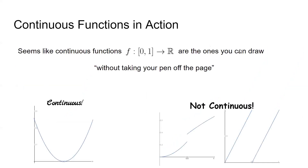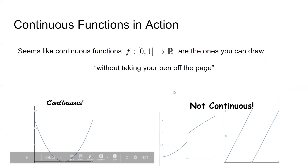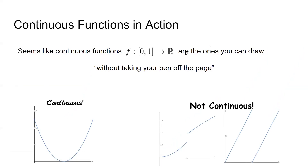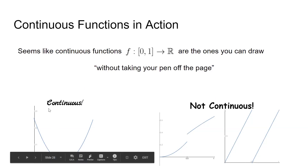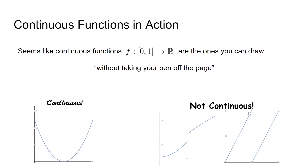From the last video, continuous functions are functions which you can draw without taking your pen off the page. Right now we're just talking about functions from the unit interval into the real numbers — continuous functions as you've seen in math class. The function on the left is continuous, and the two on the right are not. So yes, continuous functions are the ones you can draw without taking your pen off the page. But why is that the case?